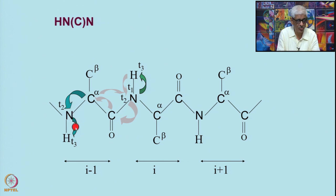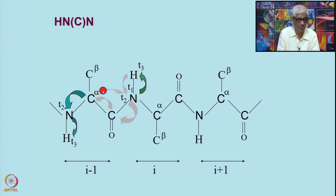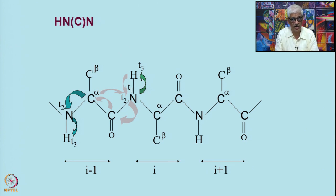From the C alpha we go back to the nitrogen of residue I and also the nitrogen of residue I minus 1. So C alpha of I minus 1 goes to nitrogen I minus 1 and also to nitrogen I. From here you go to the amide proton of residue I minus 1 and then to the amide proton of residue I. Therefore you get two correlations — there is no I plus 1 — and this helps resolve which is residue I and which is residue I minus 1.